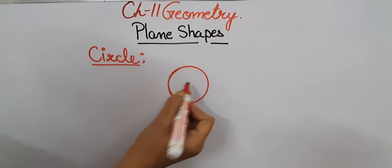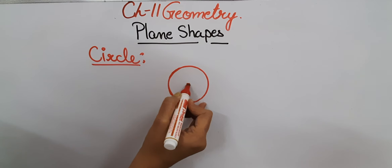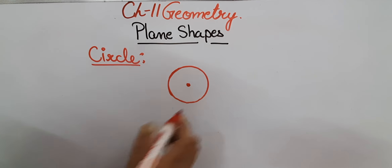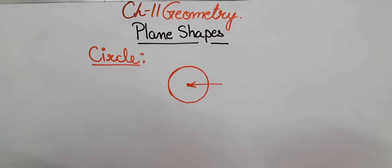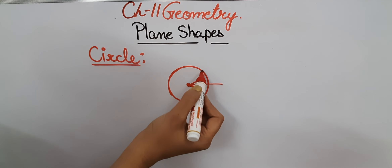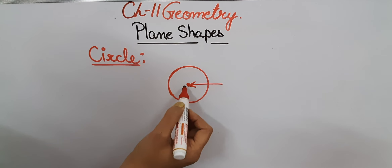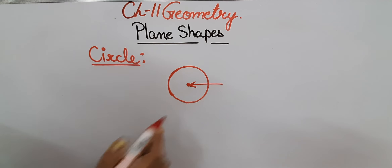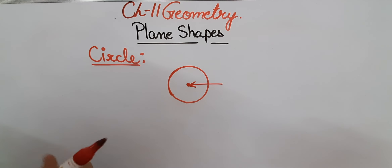This is a circle. A circle has no sides and no vertices. We can make a point in the center of a circle, which is known as the center. From the center of the circle, the boundary of the circle is equal from all sides — if you measure from the center to the boundary it will always remain the same from all sides.